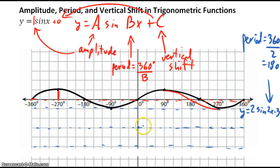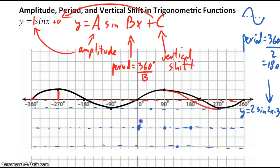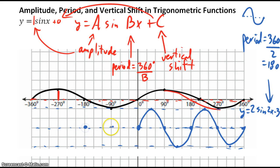Every 180 degrees, the sine wave repeats. It starts in the middle at the vertical shift of negative 3, goes up to the top boundary, back down, and completes a full cycle at 180 degrees. That is y equals 2 sine 2x minus 3.